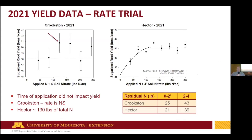If there was a response, it was somewhere near about 120 pounds. The bottom axis shows applied N plus our four-foot soil nitrate N. We're looking at around 40 pounds at both locations at the four-foot level. Hector was closer to around 130 pounds, and our southern site last year was closer to about 200 with about a 40-ton maximum average. So we saw a lower response this last year than we did in 2020.